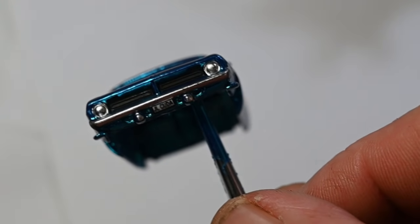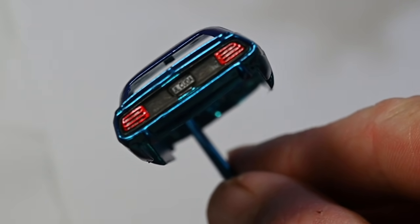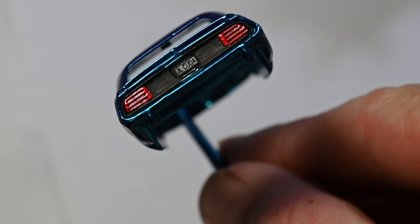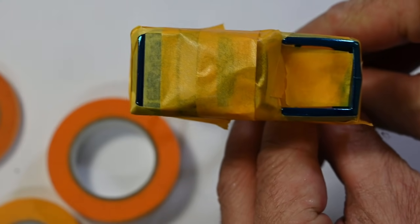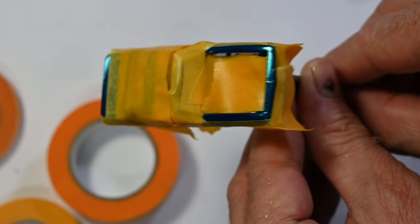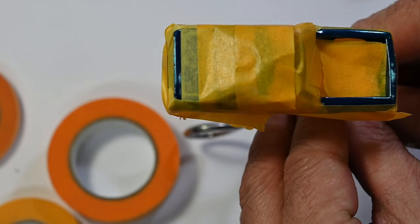I topped all of that with a couple of coats of nice gloss clear. Once that was well dried, I masked off the spoiler at the back and the top of the bonnet.